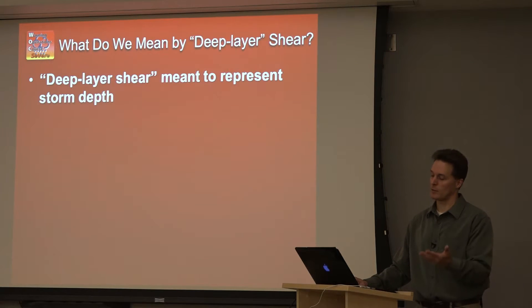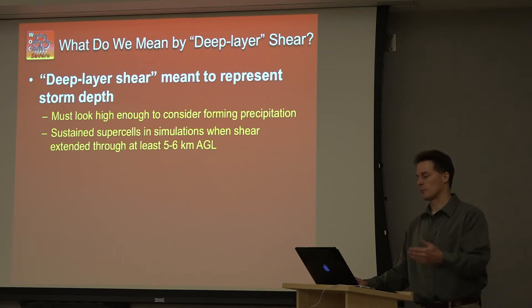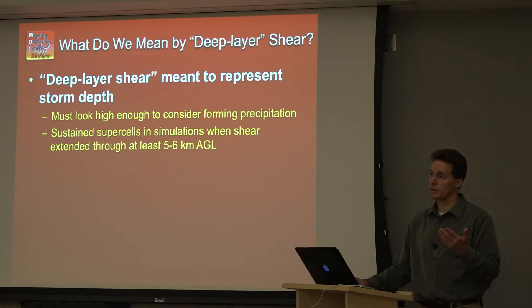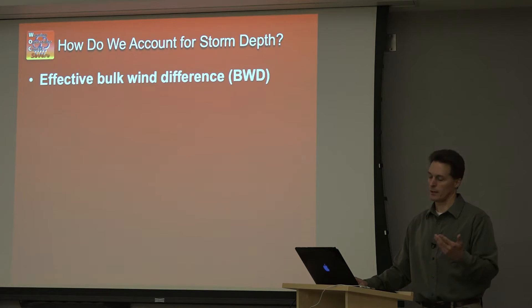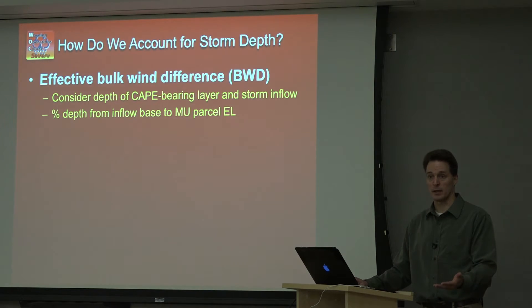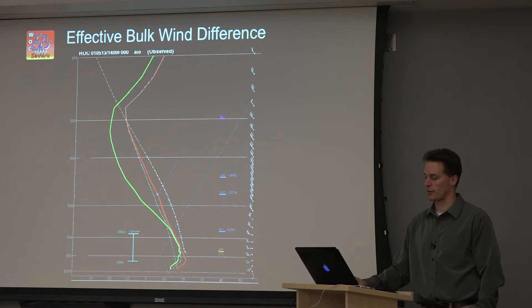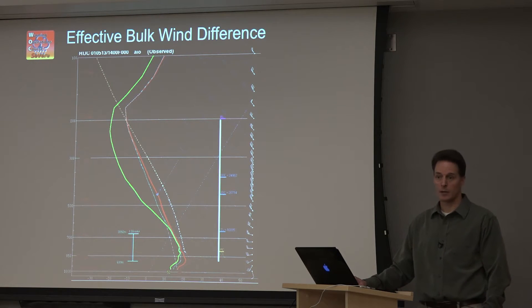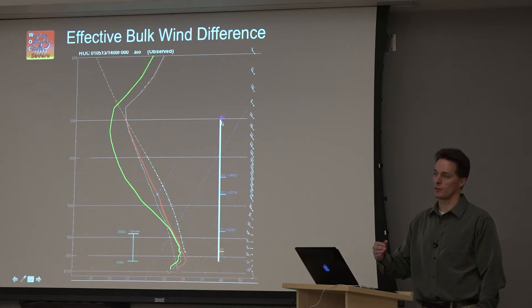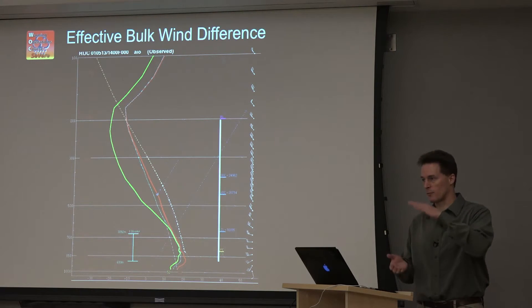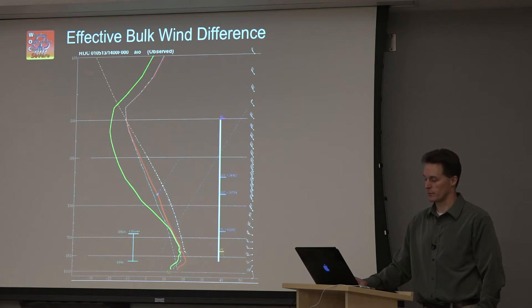What do we mean by deep layer shear? Same kind of argument — we need to look high enough to get precipitation removed from the updraft and sustain supercells. Numerical simulations and observations suggest you have to look at least five or six kilometers deep based on typical buoyancy profiles. So we've developed the effective bulk wind difference — also called effective shear — where we consider the CAPE layer of the storm and then look at percentages, or slices, of the depth of that layer. Going to the elevated supercell sounding, this spans from the bottom of the effective inflow layer up to the equilibrium level of the most unstable parcel.